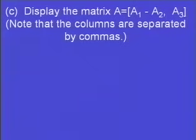Here we want to display the matrix A is equal to A sub 1 minus A sub 2, comma A sub 3. Anytime that you have more than one column, it's going to be separated by commas. So in that first column, I have an expression, A1 minus A2, but that's just the first column. The second column is A sub 3. So there are only two columns in this matrix A now.